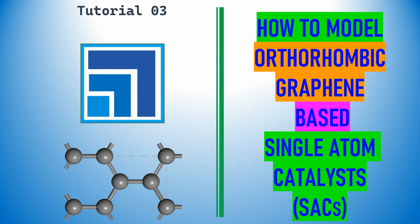Dear friend, this is Tutorial 3 in Material Studio. In this tutorial you can learn how to model an orthorhombic graphene-based single atom catalyst. This is the orthorhombic graphene unit cell I'm going to use.